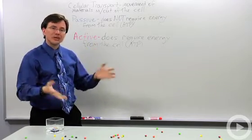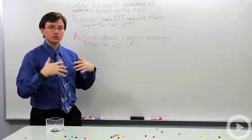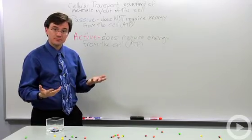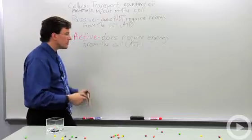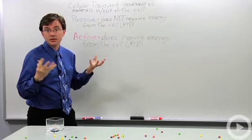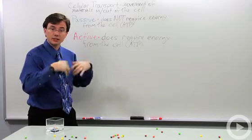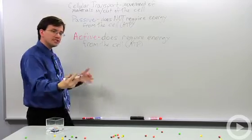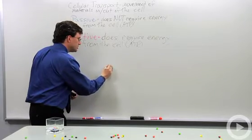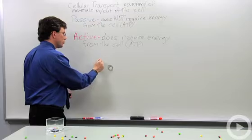The next one is something called endocytosis. Endo is a root word that means into, cyto means the cell. So how does that work? That's how you get a large chunk, maybe even something the size of another cell, say a bacterial cell being eaten by a white blood cell. If it's too big to fit through any pore in the membrane, how do you get it through?